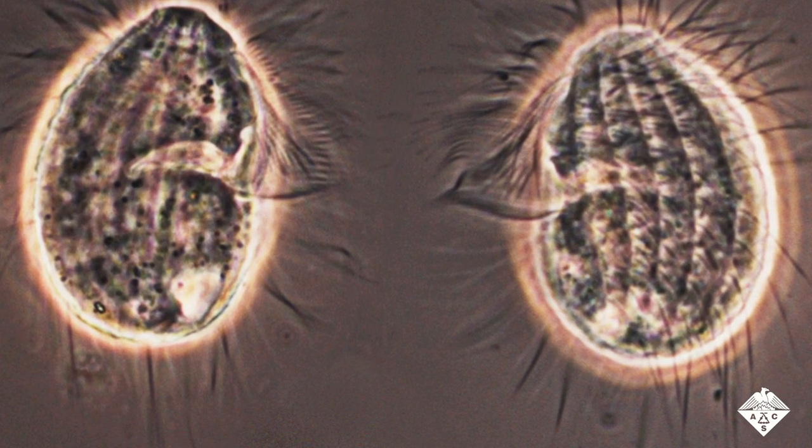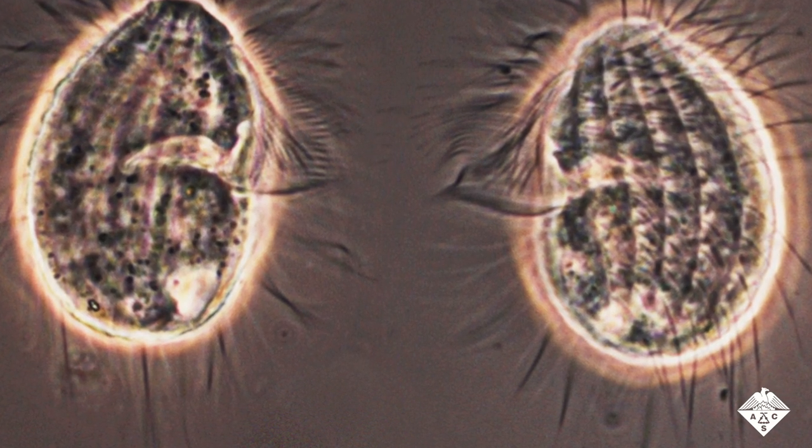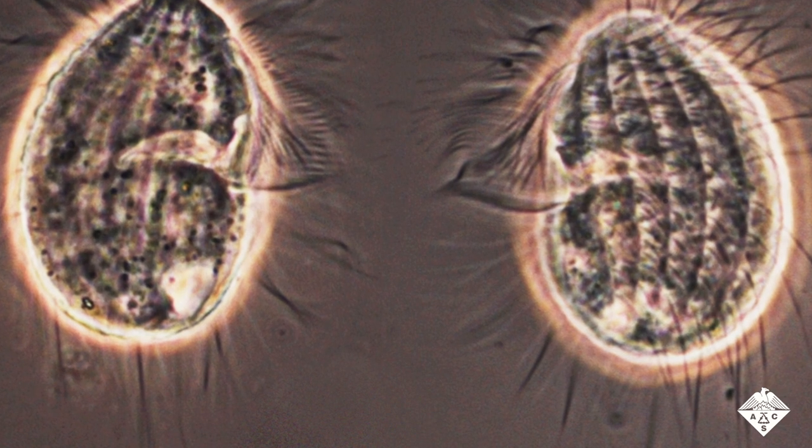Cilia are hair-like structures that cover some cell surfaces, and their rhythmic motions move liquids around the cells or help propel them.